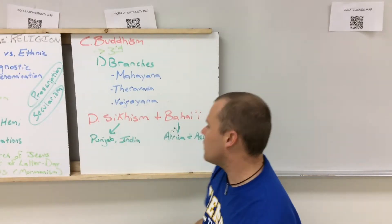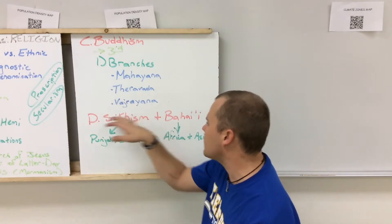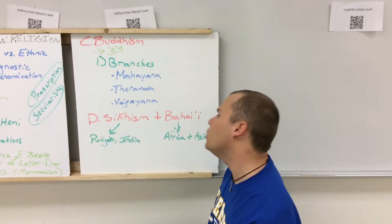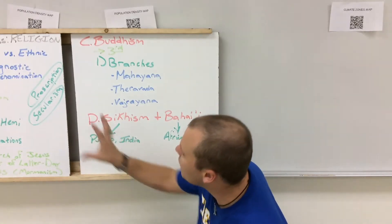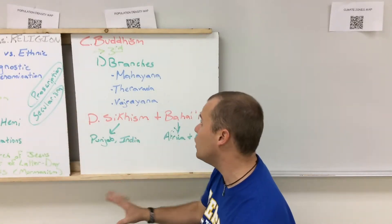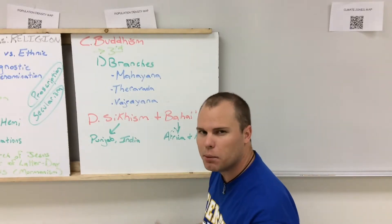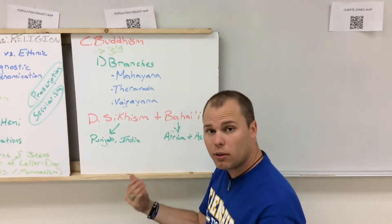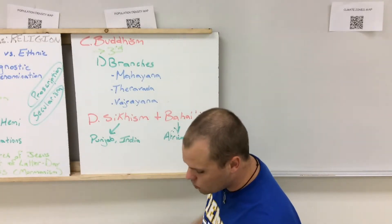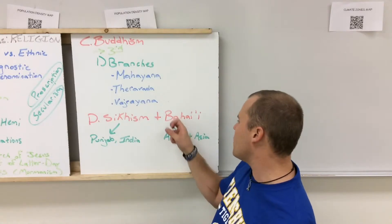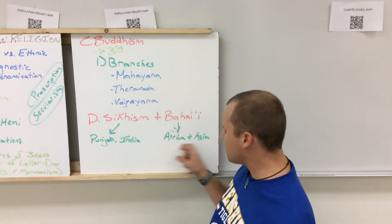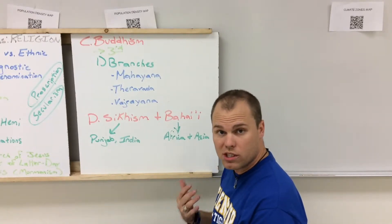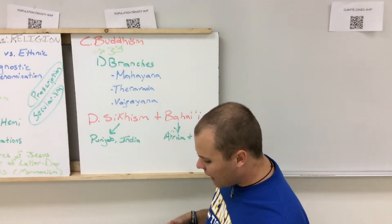The next two universalized religions are Sikhism and Baha'i. The Sikhs are located mainly in northern India in the region referred to as Punjab, situated between Islam and Hinduism. They are monotheistic like Islam and believe in reincarnation like Hinduism, combining elements of both. The Baha'i religion is mainly found in Africa and Asia and is a very young religion, established around 1844.